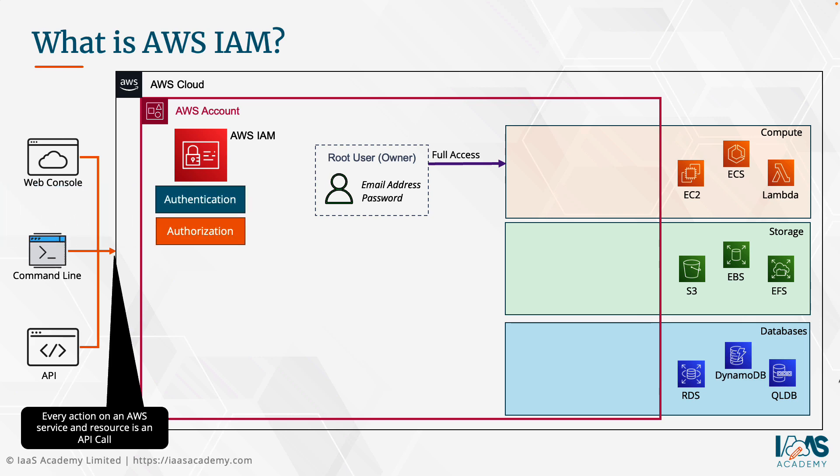These two features are authentication and authorization. Authentication is basically a means of identifying who you are — AWS needs to verify your identity. Authorization refers to the sort of permissions that you have once you have been authenticated against the platform. Now on AWS, in addition to the root user, you can provision a wide range of different identities. We call these principals.